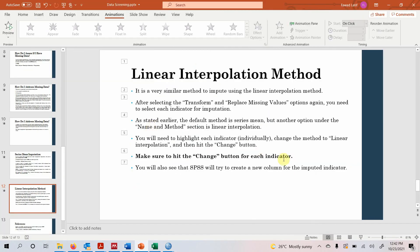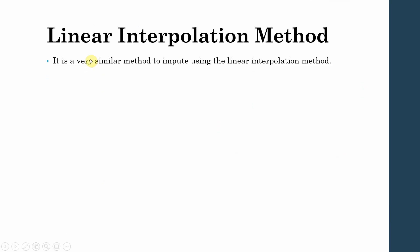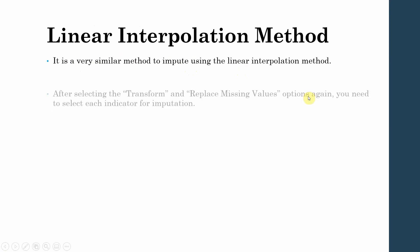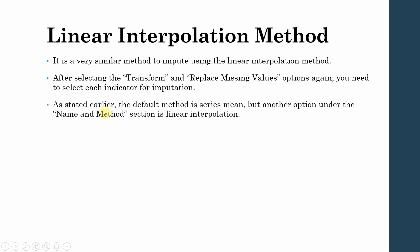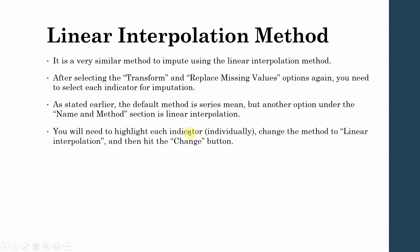Now for the linear interpolation method. It is a very similar process. After selecting Transform > Replace Missing Values, select each indicator for imputation. The default method is series mean, but you need to change it — select the Linear Interpolation option and make sure you hit the Change button to actually apply the method change.